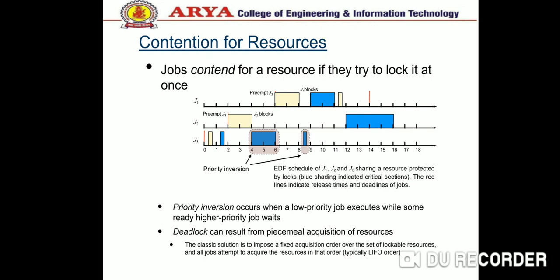A resource access control protocol, or simply an access control protocol, is a set of rules that define: first, when and under what conditions each request for a resource is granted; and second, how jobs requiring resources are scheduled.